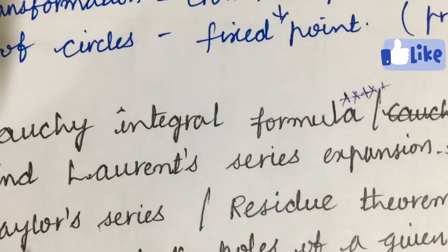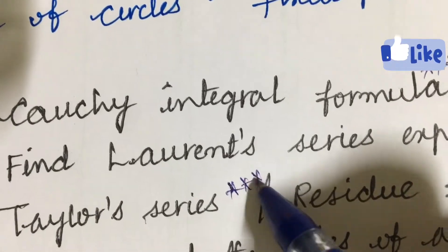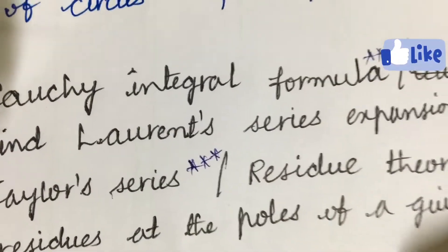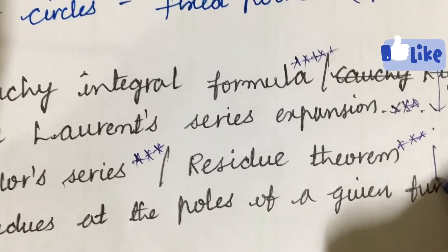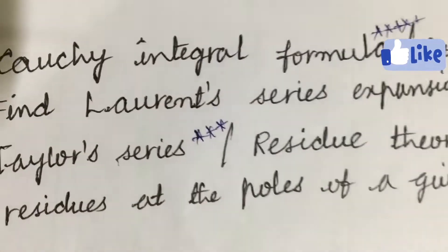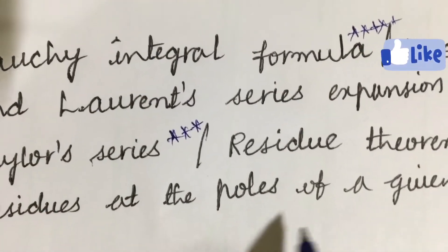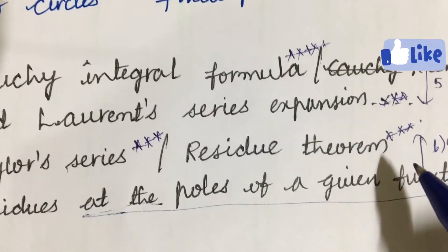A very important and gunshot question is from the Taylor series as well as redefine the residue theorem and work out problems related to it. From these two parts you are going to get 6a as well as 6b. Find the residues at the poles of a given function may also be one of the very important and gunshot questions.